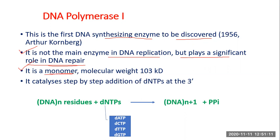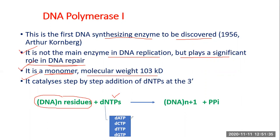Structurally, DNA Pol I is a monomer made up of only a single polypeptide. Its molecular mass is 103 kilodaltons. It catalyzes the step-by-step addition of dNTPs (deoxynucleotide triphosphates) at the growing 3' end. Based on what nucleotide is on the template strand, one of the four dNTPs — dATP, dCTP, dTTP, and dGTP — is picked up, the chain is elongated by one nucleotide, with concomitant release of a pyrophosphate group.